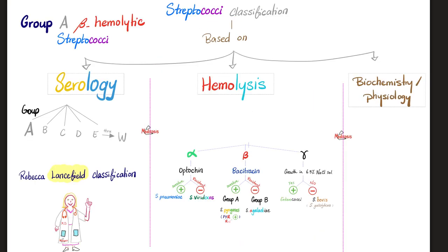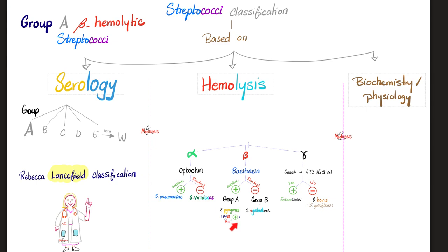In the previous video, we talked about the classification of streptococci. When I say group A beta-hemolytic streptococci, or strep pyogenes, I am referring to two classifications combined. Group A is the serological classification, also known as Lancefield classification. Beta-hemolytic refers to the hemolysis classification — strep pyogenes causes complete hemolysis. Strep pyogenes is sensitive to bacitracin antibiotic and is PYR positive, giving it the red color.